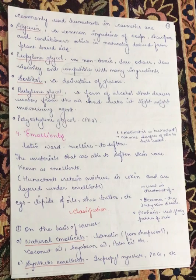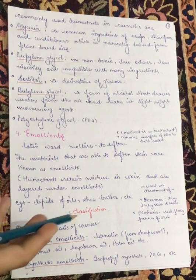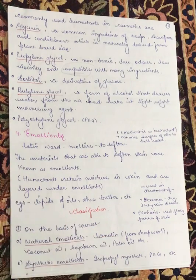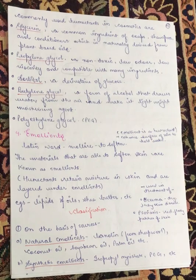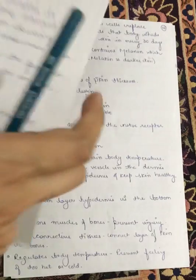Next, we have the classification of emollients. On the basis of source, they are classified into natural and synthetic emollients. In natural emollients, we have lanolin, which is derived from sheep wool, coconut oil, soybean oil, palm oil, etc. In synthetic emollients, we have isopropyl myristate, polyethylene glycol, etc.